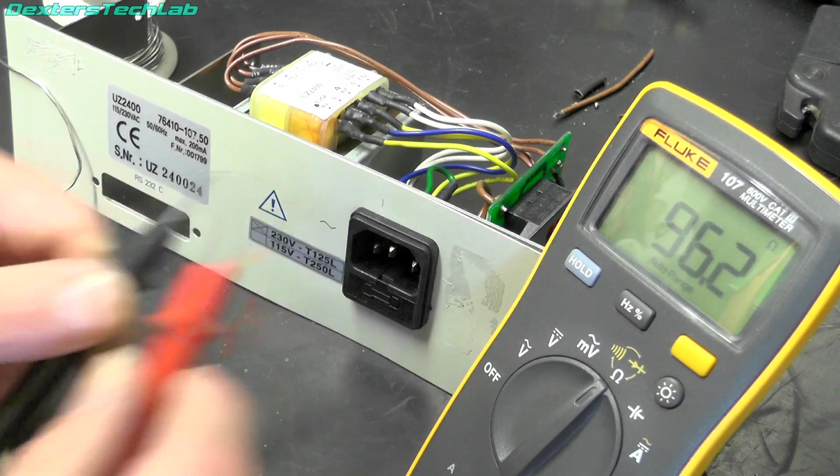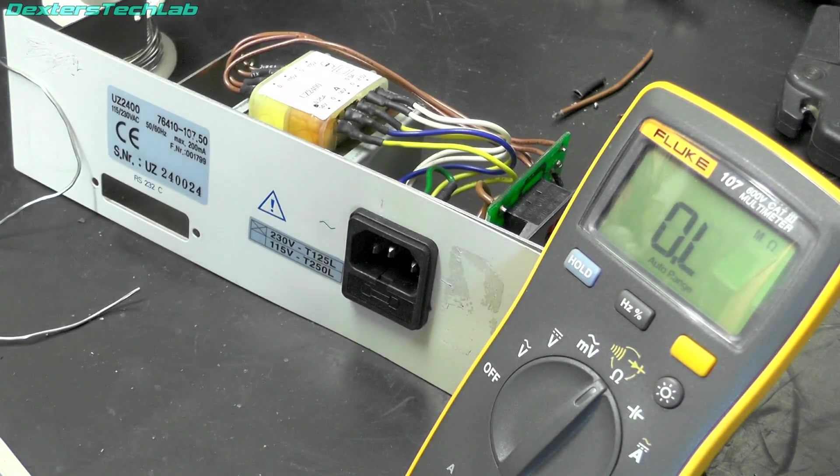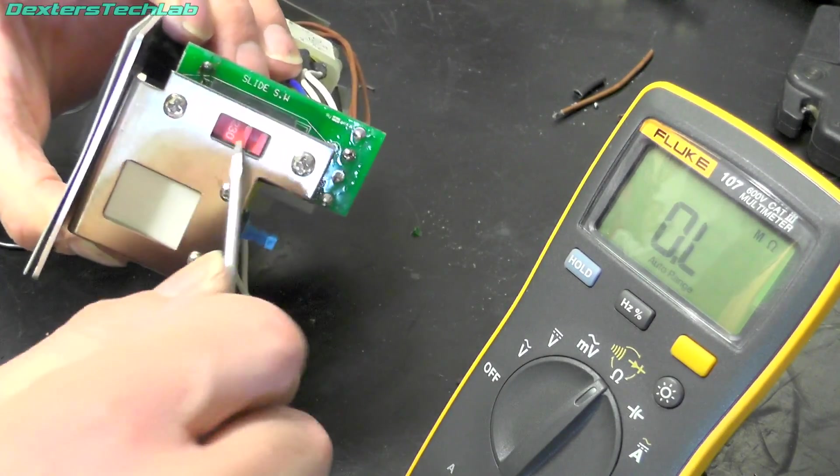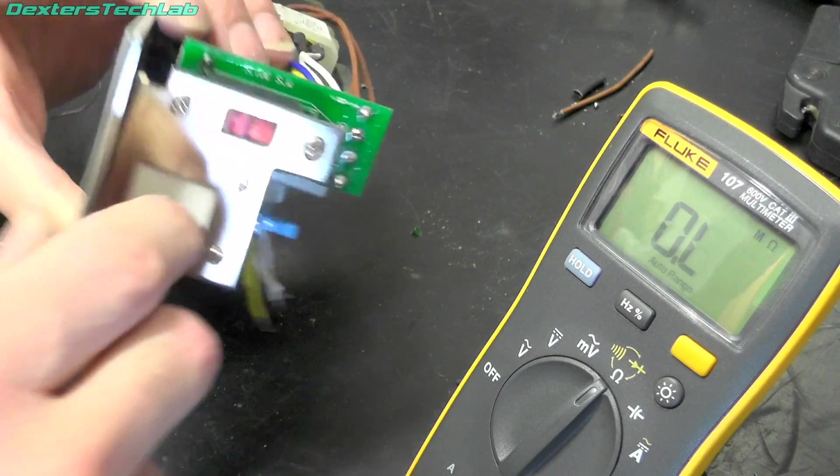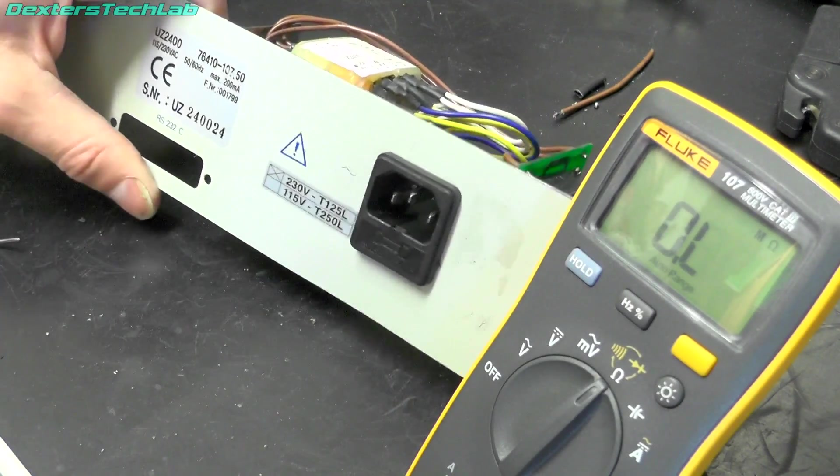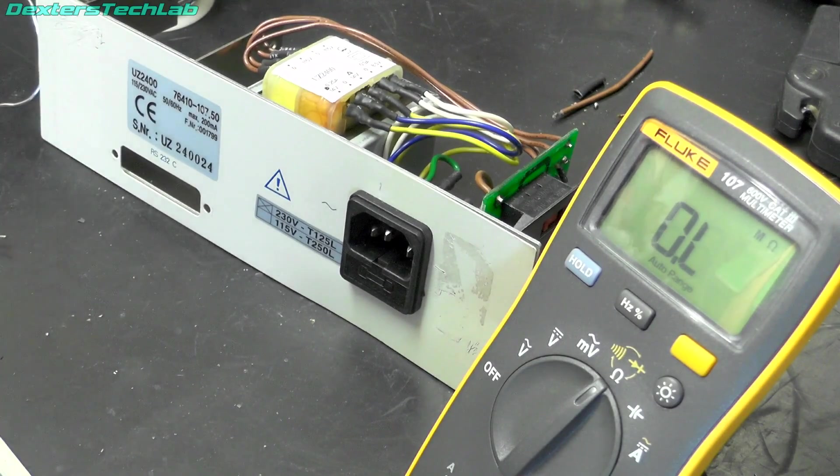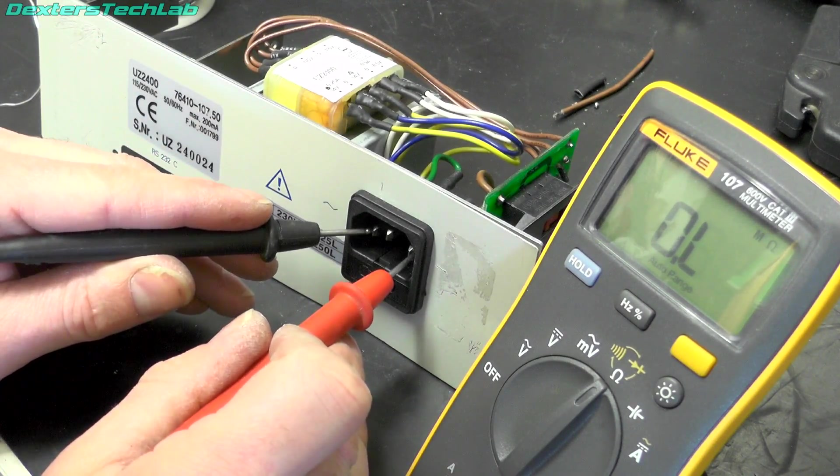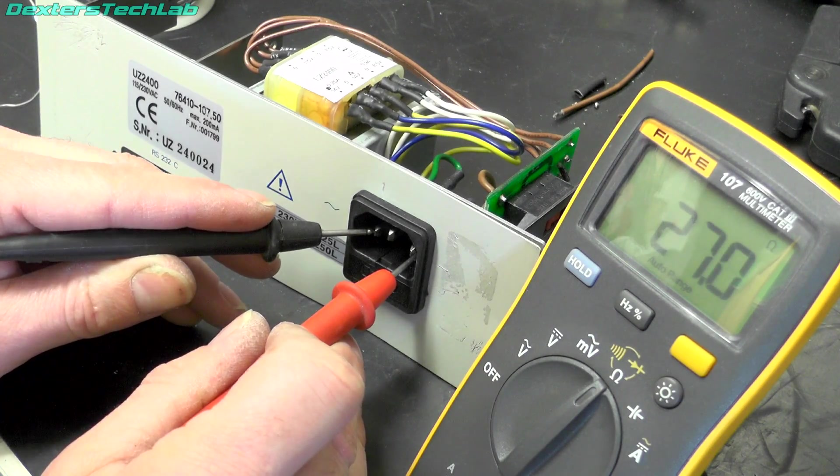95 ohms and if we switch the voltage selector to 110 or 115 as it says there we should have a lower resistance across here. Yes, there we go.